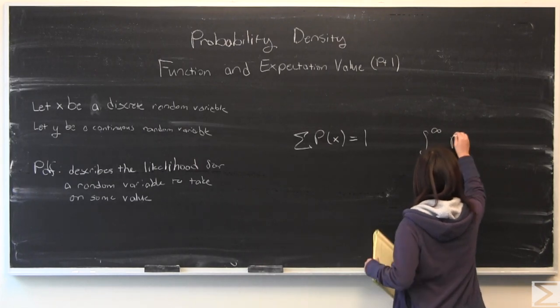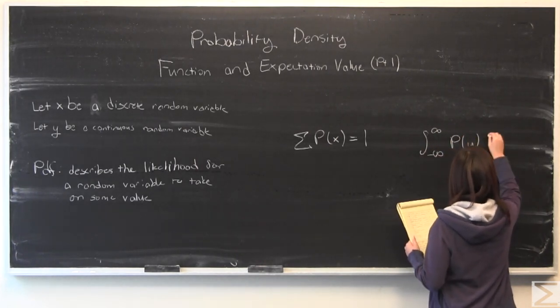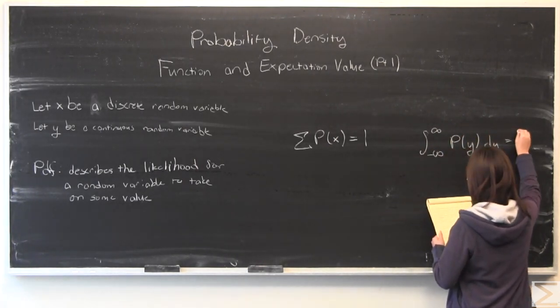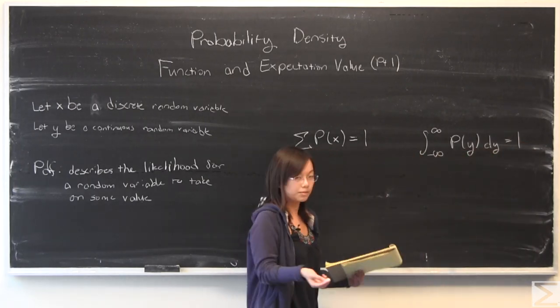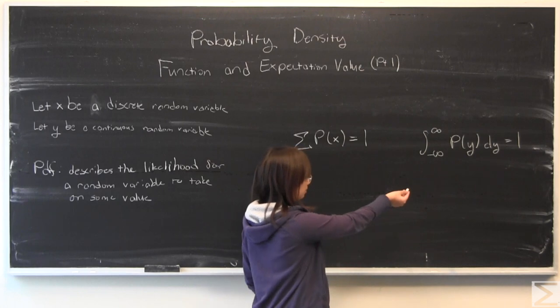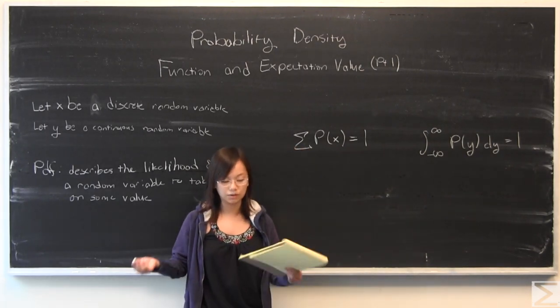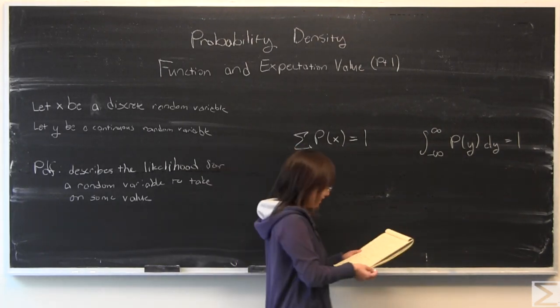For the continuous case, it looks like this, and it means the same thing. So all possibilities must be accounted for. All probabilities must be taken into account. If you add up all those probabilities, it needs to equal one. It can't be greater than one. It can't be less than one.